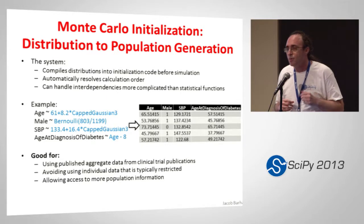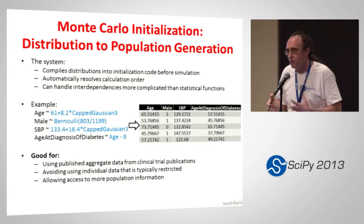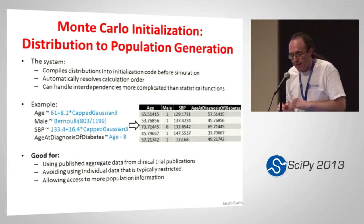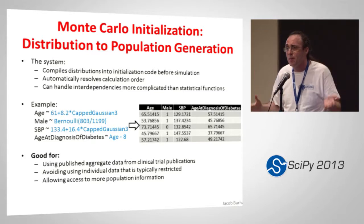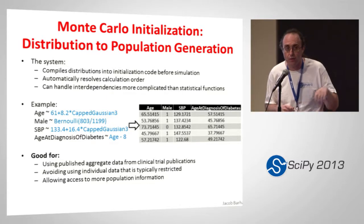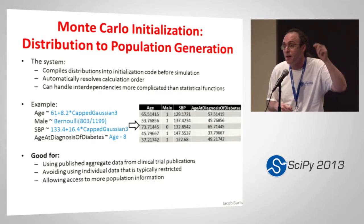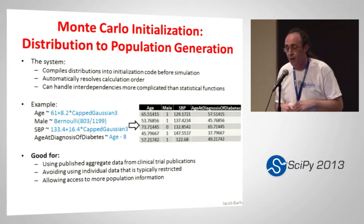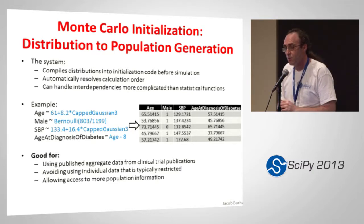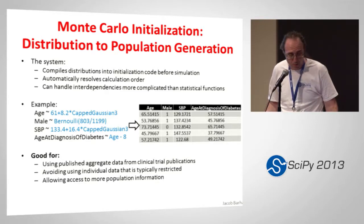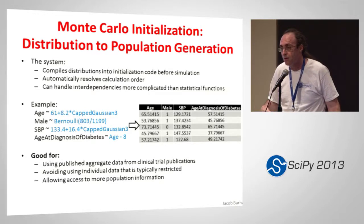Using MIST's own language, you can define distributions and MIST will generate the population table for you. The nice thing is that individual data is highly restricted with many rules governing its use, while aggregate data is publicly available and open from many sources. If you go to clinicaltrials.gov, you'll find many clinical trials where table one in each publication describes the population by distribution. So if you copy this table and plug it in, the system will generate the population for you. This allows you to access much more data while avoiding restrictions on individual data. At the same time, MIST does allow you to import a clean individual data table if you have one — you have the benefit of both worlds.